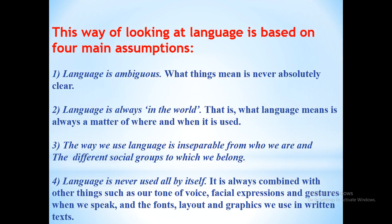This way of looking at language is based on four main assumptions. The first one: language is ambiguous. What things mean is never absolute — language is always in the world, meaning what language means is always a matter of where and when it is used. Therefore, when you analyze a text, there will be hidden meanings that the writer probably wants to convey, and to understand that you have to learn discourse analysis.